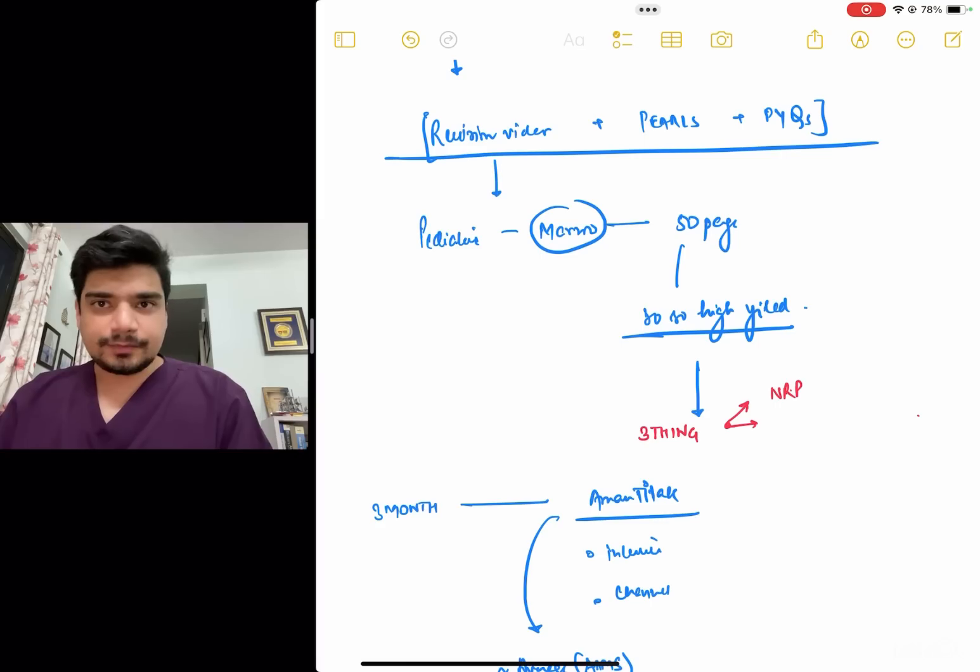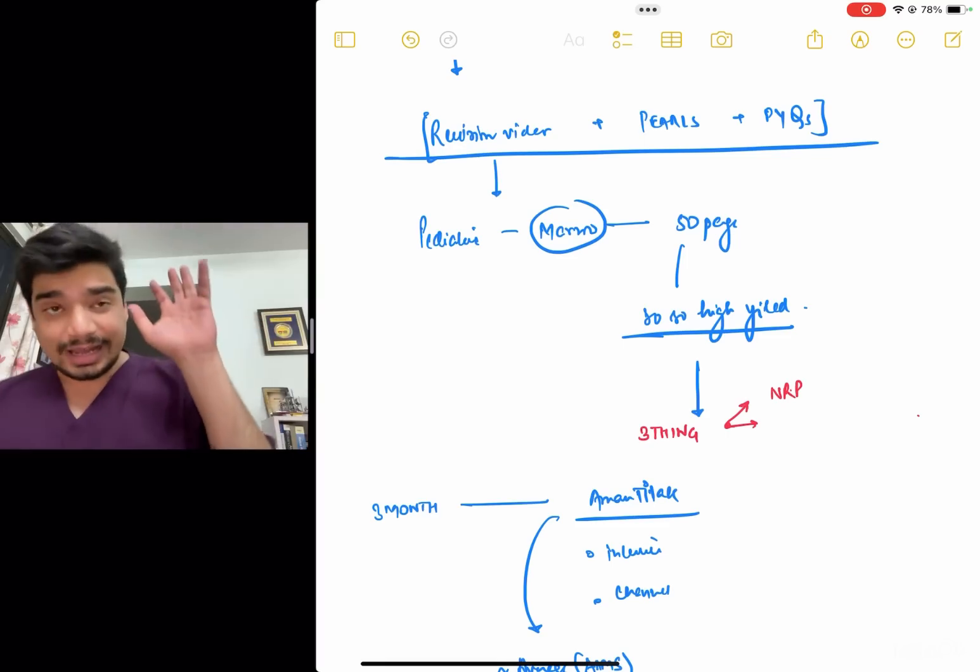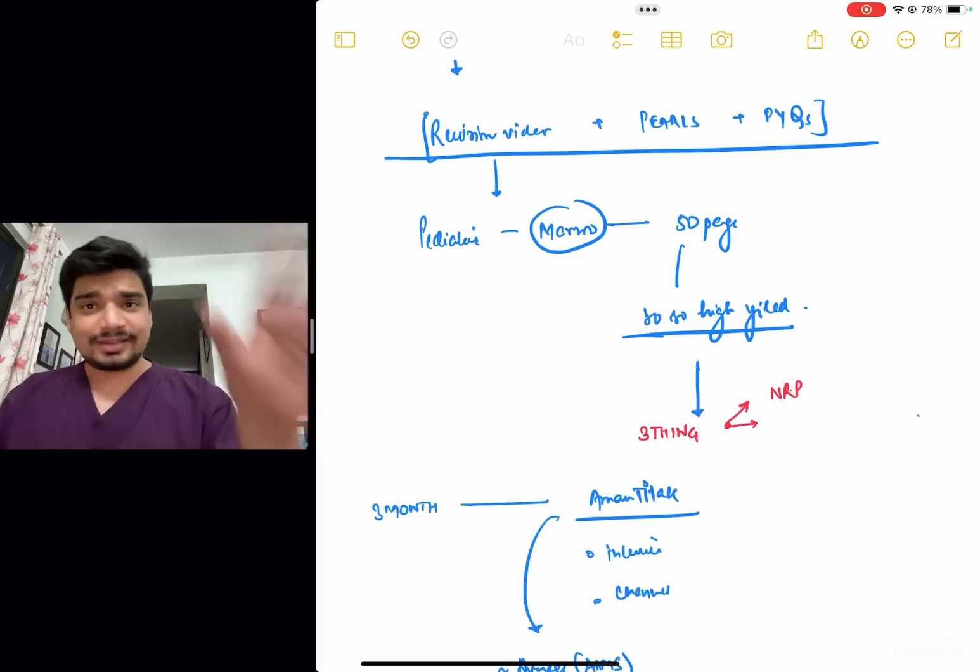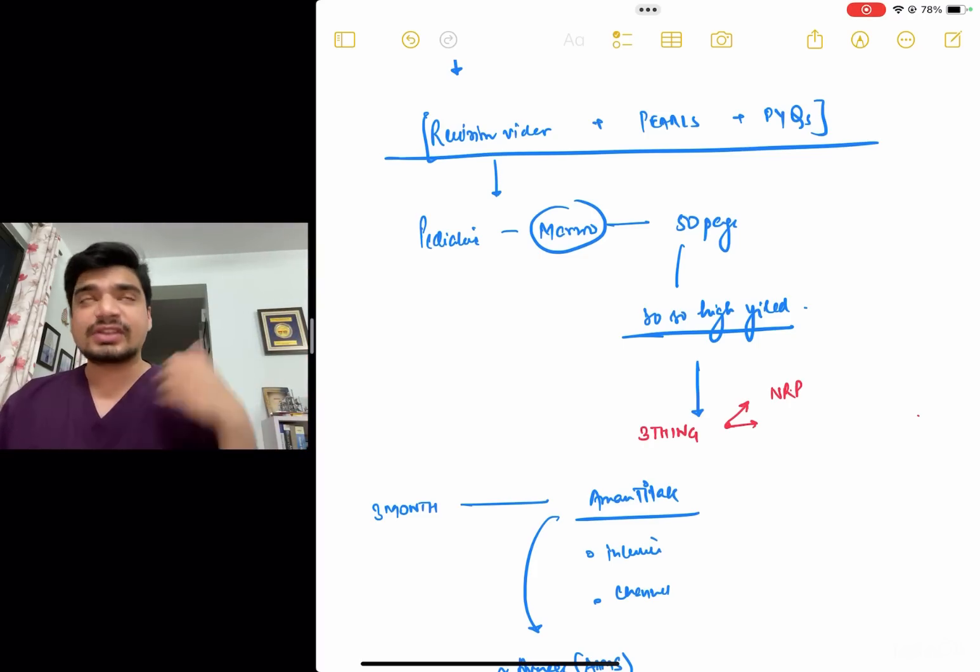So NRP was missing. One major exclusion I felt was NRP is asked repeatedly, that was missing. And 2-3 small minor things I felt were missing, otherwise they were really good. The same is valid for Prepladder, Dr. Meenakshi has made excellent revision videos.